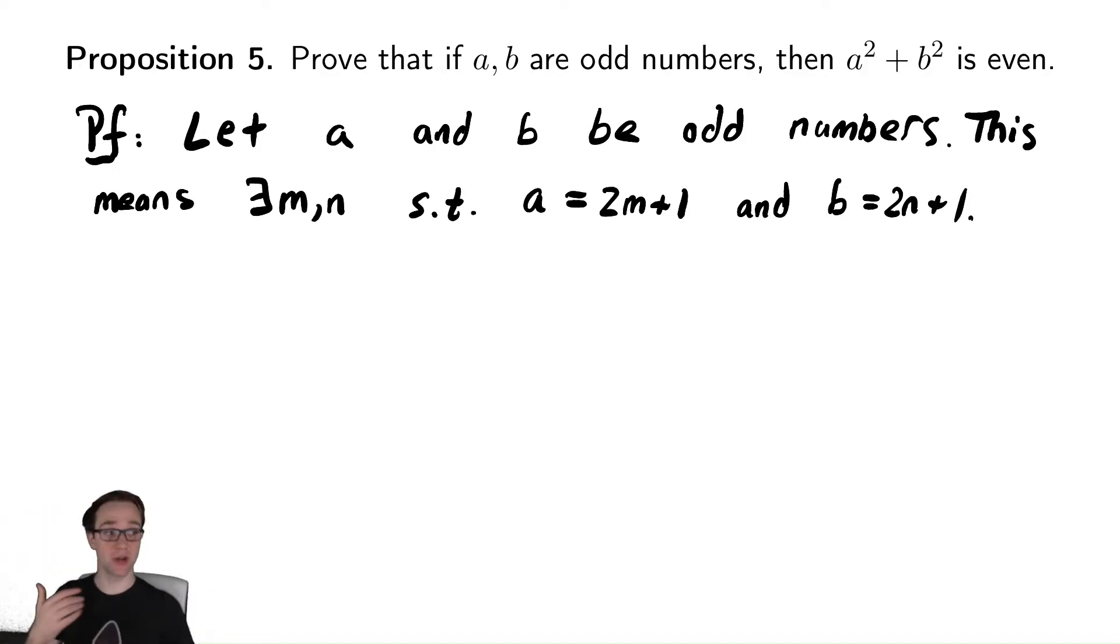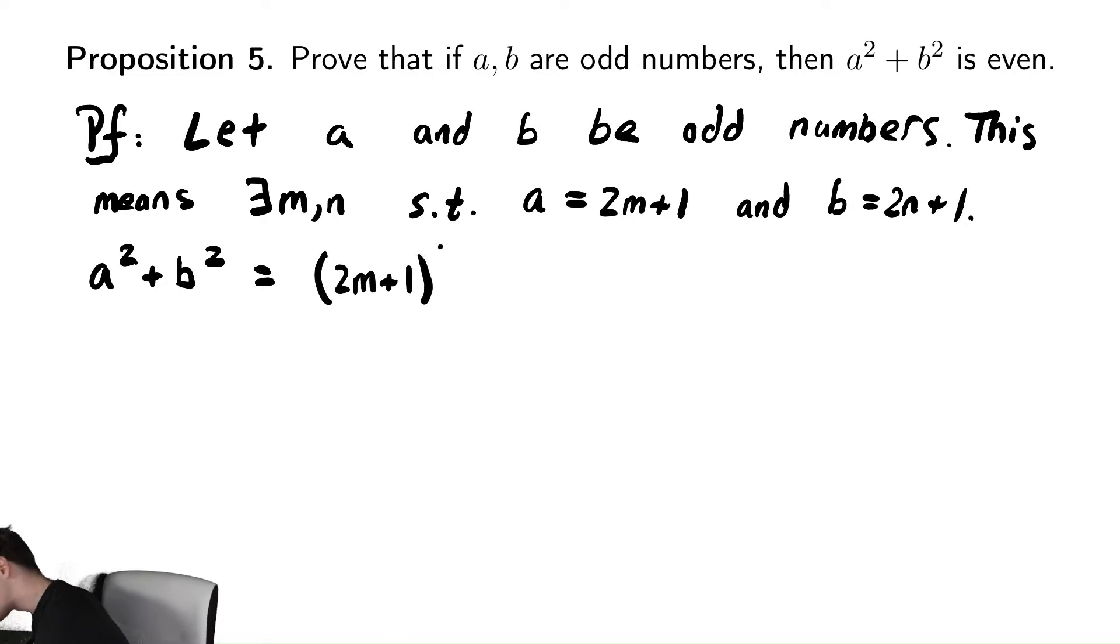And now I want to try to figure out what's going on with a² + b². We know a² + b² must therefore equal, using those new representations of a and b, (2m + 1)² + (2n + 1)². And I need to show that that's even. At this point, it's not obvious what to do, so now we need to do more algebra.